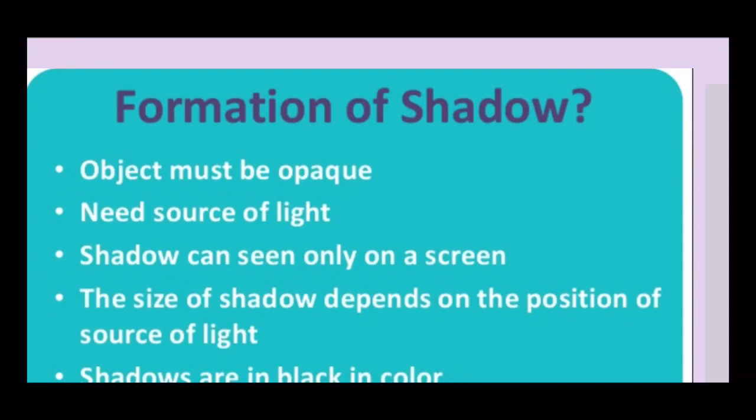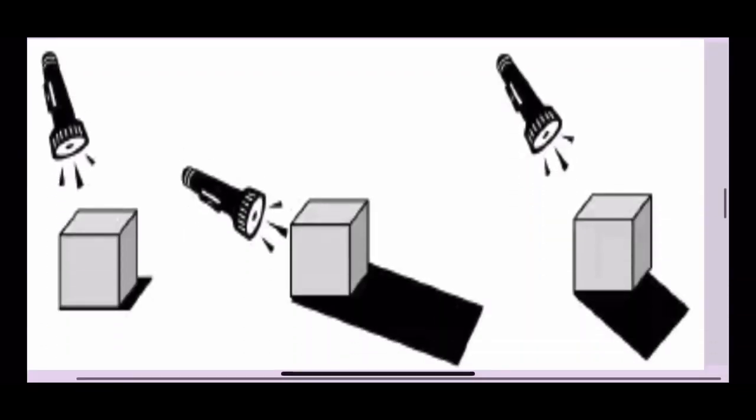You will also notice that the shadow is always black in color. The size of the shadow depends on the position of the source of light. You can observe that during morning time and evening time, the size of your shadow is larger than you. But in the noon time, when the sun is over your head, your shadow is smaller than you. So we can say that the object's shadow may be small, large, or the same size. It depends on the position of the light source.